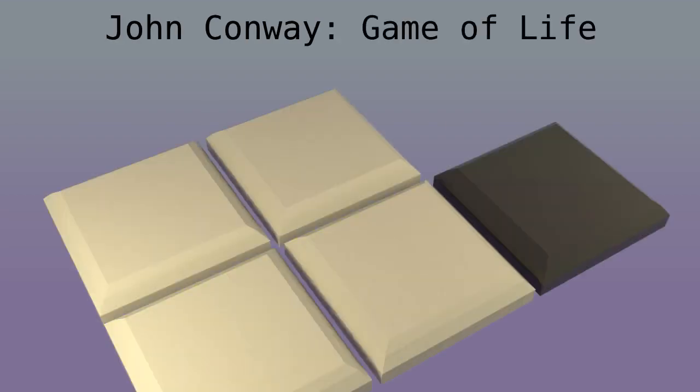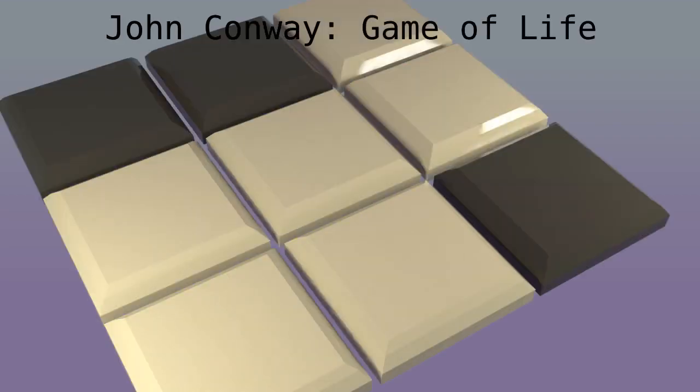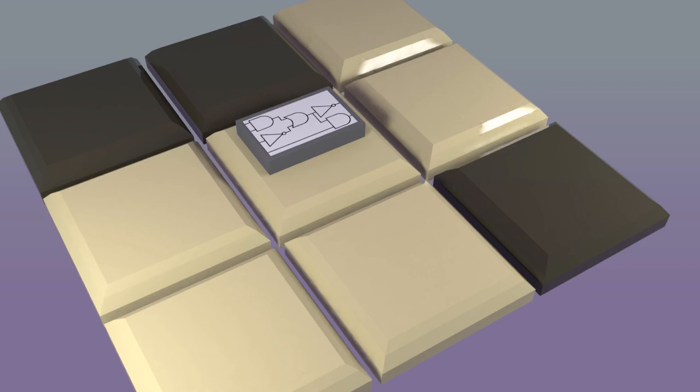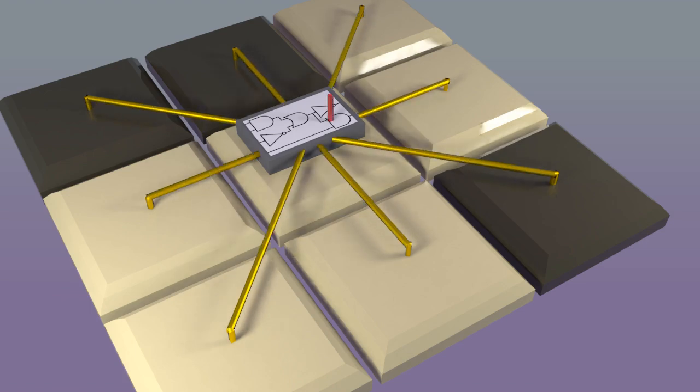John Conway invented the game of life. We have a square grid of tiles that can be either black or white. At each tile there's a logic box to decide what color it will have next. The box looks at the eight neighbors as input and produces an output.